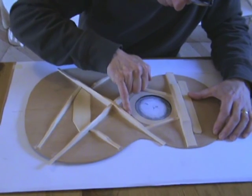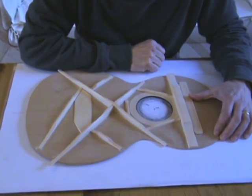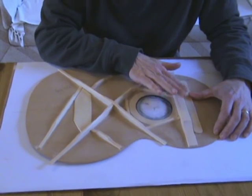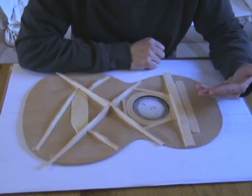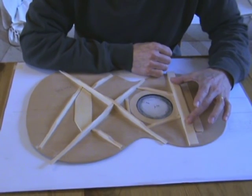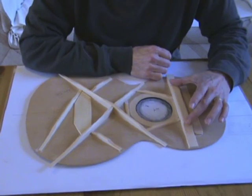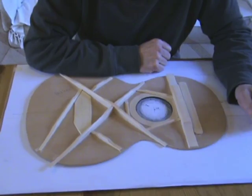So these three braces here are reinforcing that area. And this big brace here, that's supporting the fingerboard. You've got to think that the fingerboard is pushing against this brace. So a nice big brace there to support the fingerboard.